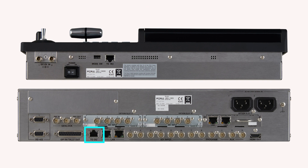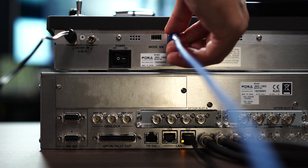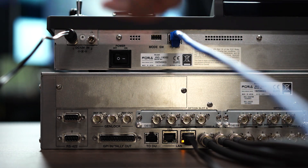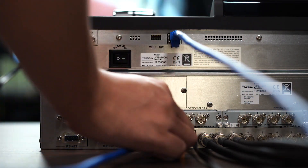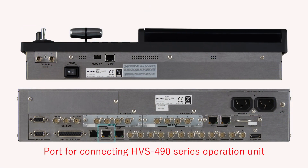2OU is a port for OU communication. Use the LAN cable supplied with the product to connect it to the port 2MU on the HVS-190 OU side. HVS-LAN is a port for connecting the auxiliary panel and the HVS-490 series operation unit.